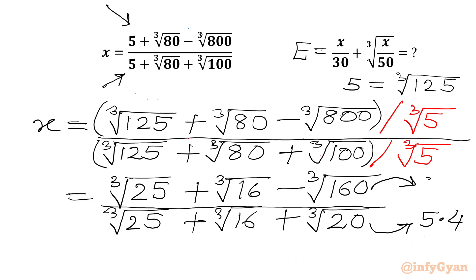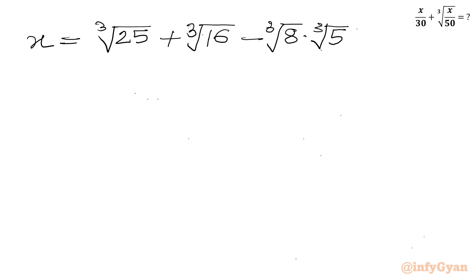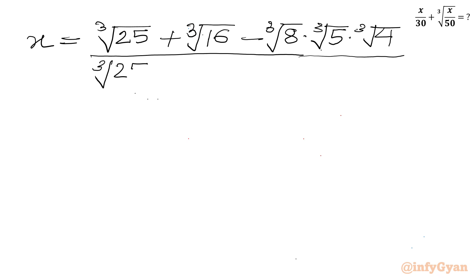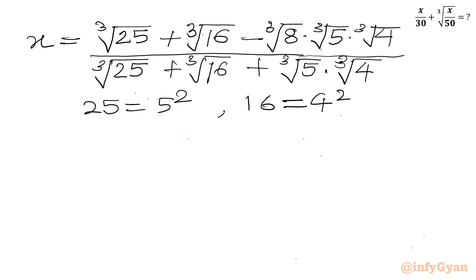Now we can factor 20 as 5 times 4, and we can factor 160 as 8 times 5 times 4. We note that 16 can be written as 4 squared, and cube root of 8 is 2.